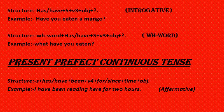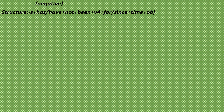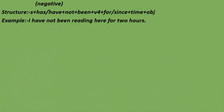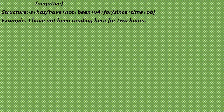The negative structure is: Subject + has/have + not + been + V1-ing + for/since + time + Object. Example: I have not been reading here for two hours. (मैं यहाँ दो घंटों से नहीं पढ़ रहा हूँ।)